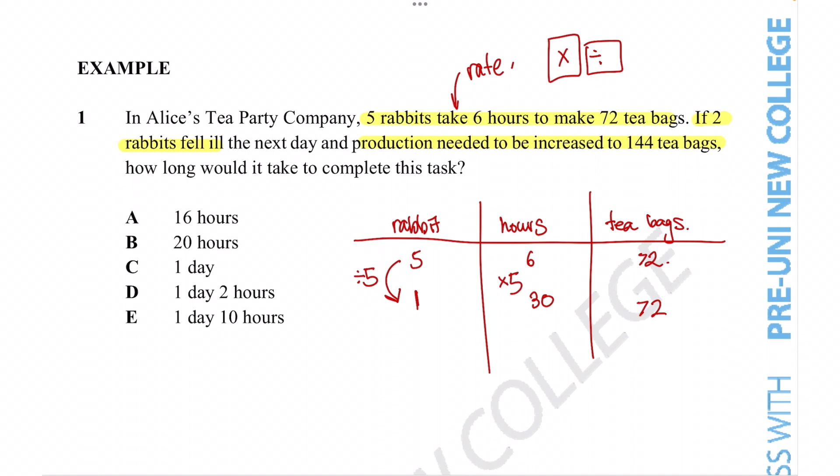So now we need to figure out what would be the case if we have three rabbits. If we have three rabbits and we're still making the same number of tea bags, we can use this information to figure out how many hours are needed. From one to three, this time we have multiplied by three to get this number. Doing the same thing, are we dividing or multiplying the hours? Well, we've got more rabbits helping out this time. So it makes sense that we divide. So we've got 10 hours only when three rabbits are making 72 tea bags. So that would be the case when two rabbits fell ill and produced 72 tea bags.